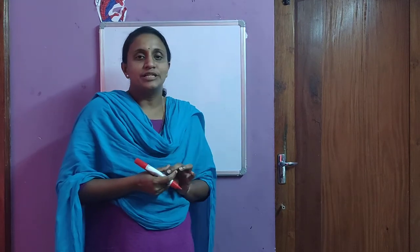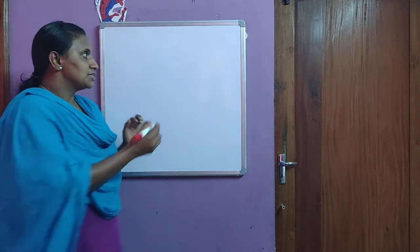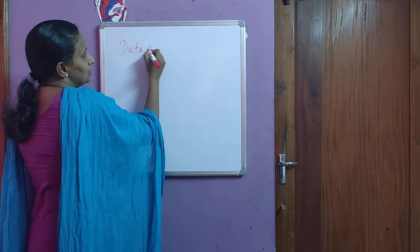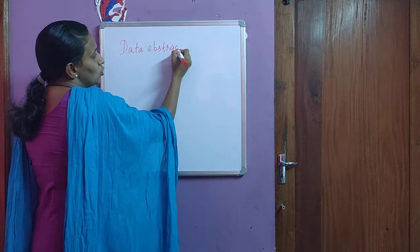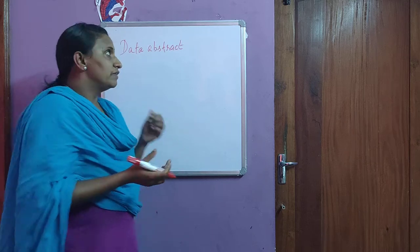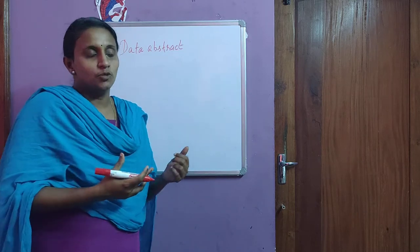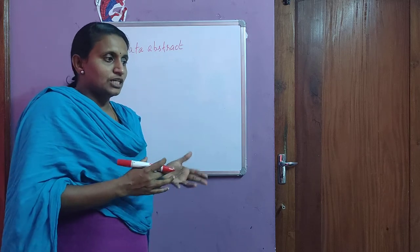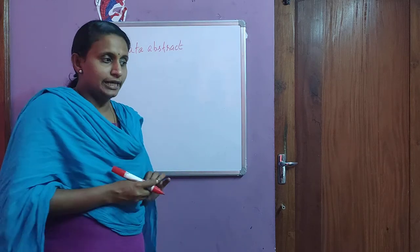Next, we discuss some key terms related to database management systems. The first term is data abstraction, which means providing users with only the essential details while hiding unwanted information. This is called data abstraction — it provides users with an abstract view of the data.